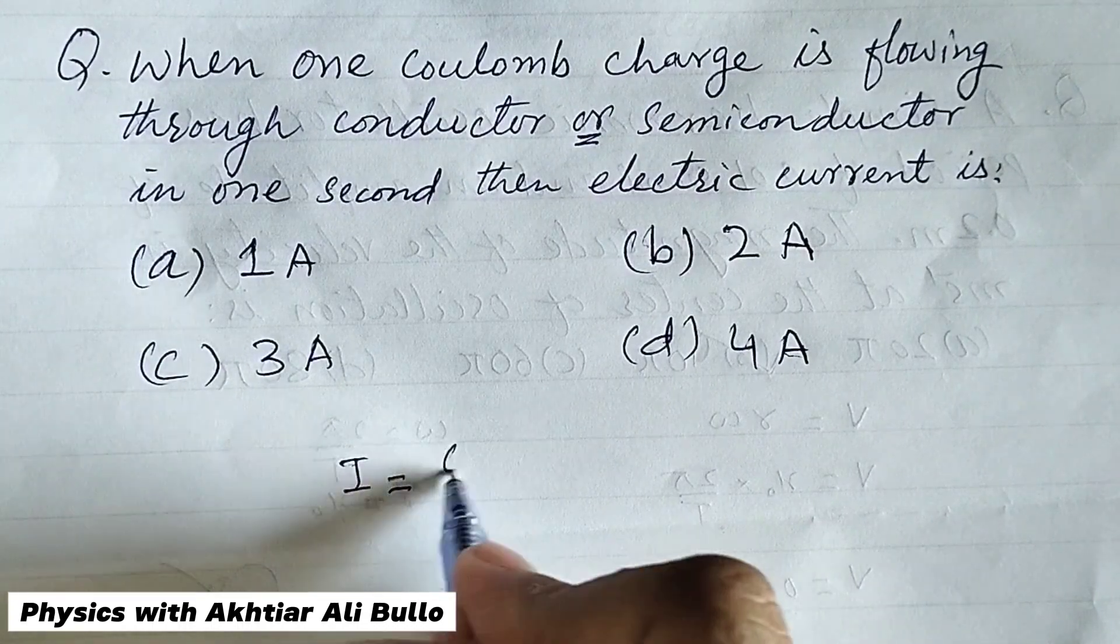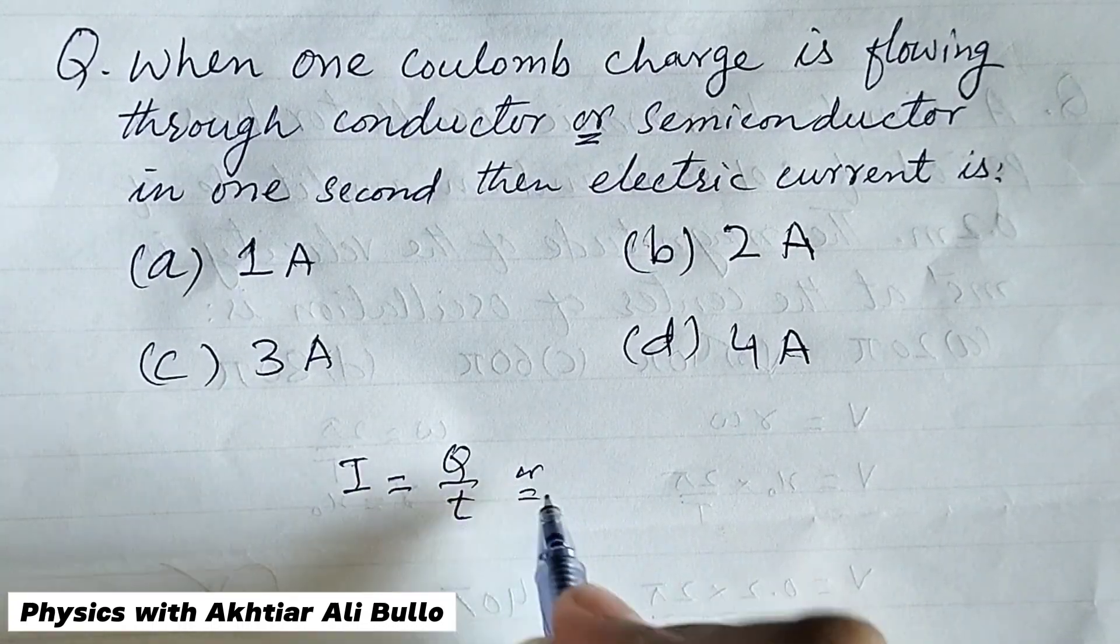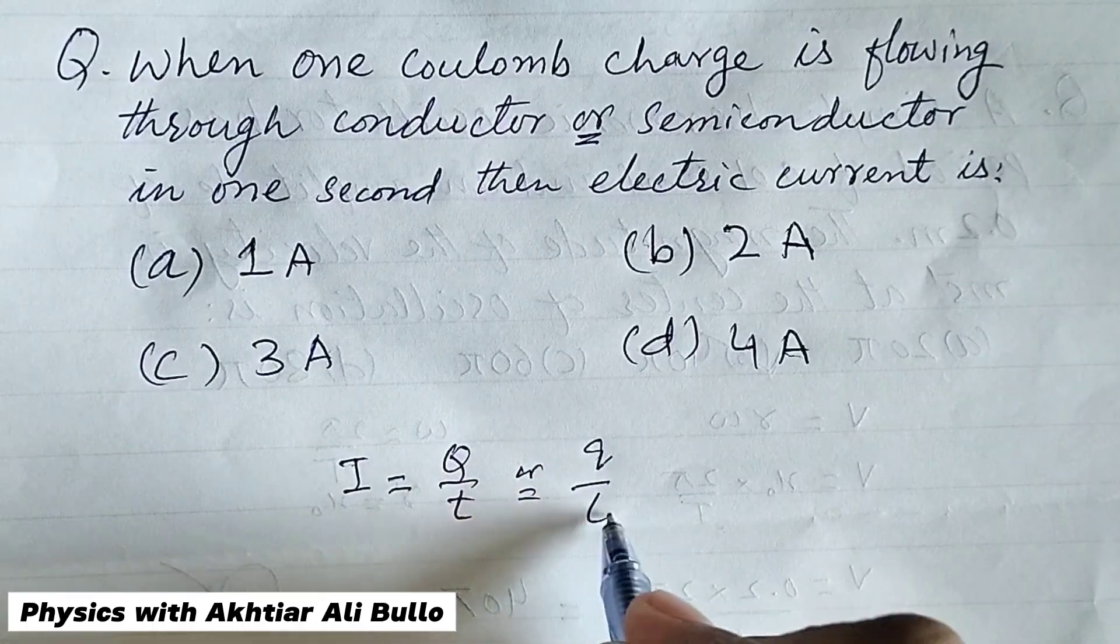I equals Q upon T, or we can also write it as Q upon T,